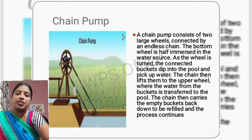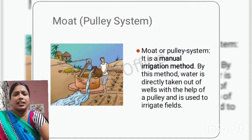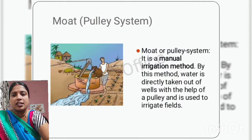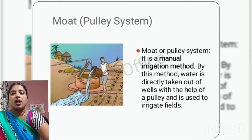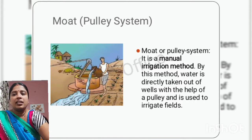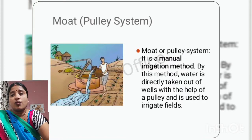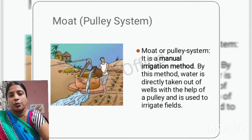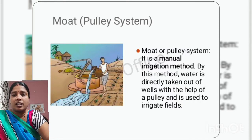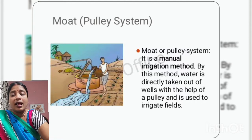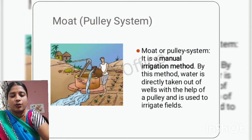The next traditional method is moat, also known as the pulley system. It is the simplest form of irrigation and is a manual method — it requires a person to perform the irrigation. In this method, water is drawn out from the well and then poured onto the field or passed to the field through canals. The well needs to be near the field for this system to work. A pulley is fixed to the well and with the help of the pulley, water is taken out and then poured into the field through canals.